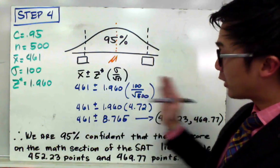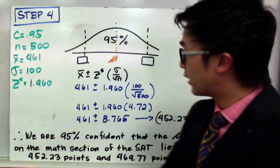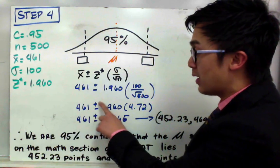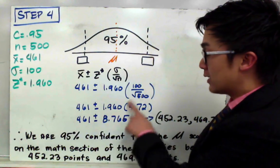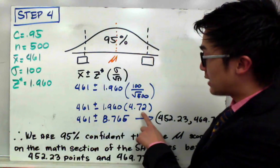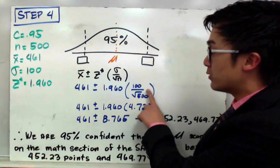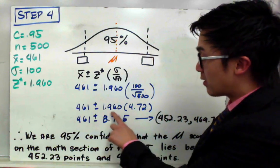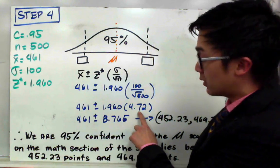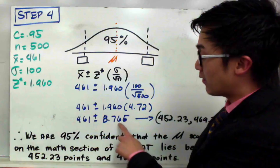By using your calculator, simplifying your expression, you'll have 461 plus or minus 1.960 times the standard error which is 4.72, which is basically 100 divided by square root of 500. And if you multiply these two together, you'll have your margin of error which gives you 8.765.